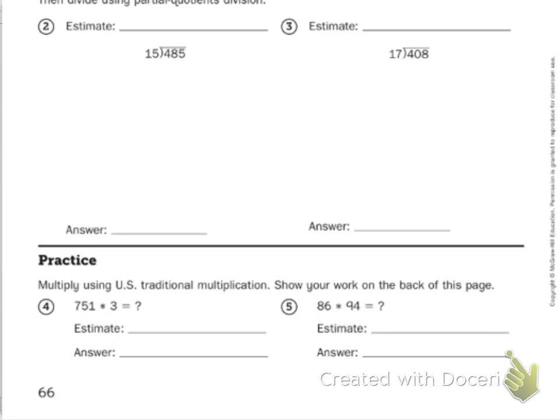So here, it wants you to first estimate, and then solve. So if I'm looking at this, I might do 500 divided by 20. And that's going to give you, so it's twice, then it's going to be 100. It's going to be 25. So 500 equals 25.